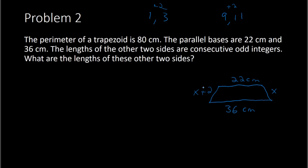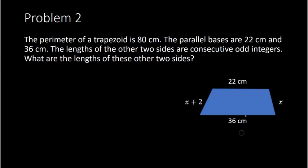It's always helpful to create a picture so you understand what the question is asking. We also need to know what perimeter means — perimeter is the distance all the way around. So if I add all the lengths together, that gives the perimeter. Adding x plus 2, plus 22, plus x, plus 36, we know that equals 80. So that is my equation: 22 plus 36 plus x plus x plus 2 equals 80.